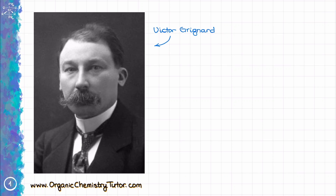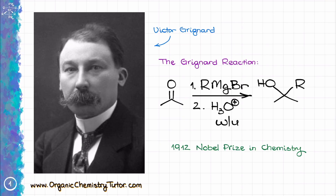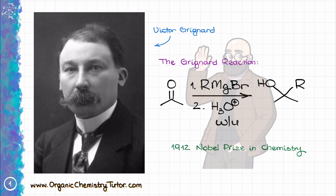Victor Grignard is best known for two things: one hell of a mustache he sports on every picture of him on the internet, and the reaction named after him which earned him a Nobel Prize in 1912.